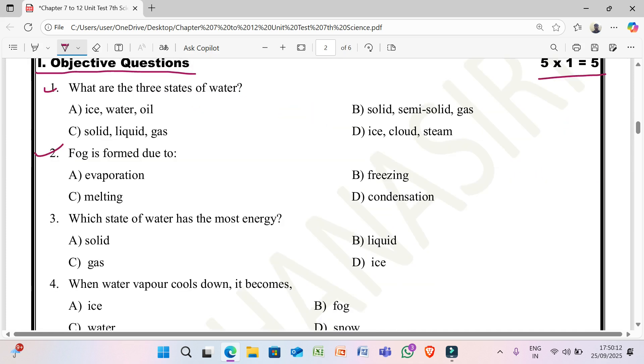Second question: fog is formed due to A) evaporation, B) freezing, C) melting, D) condensation.